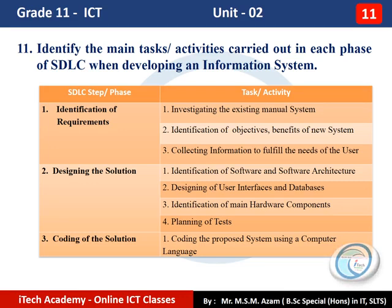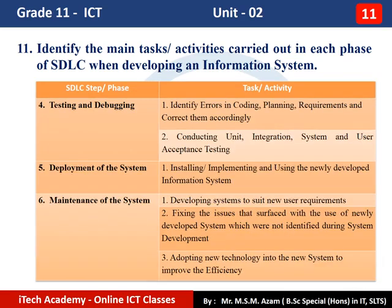Coding is an important part of system development. The main activity in this phase is coding the proposed system using a computer language such as Pascal. Next is Step 4: testing and debugging. The purpose is to find and fix any errors in the program. There are two main tasks: first, identify errors in coding and correct them; second, conduct unit, integration, system, and user acceptance testing — these are the four types of testing.